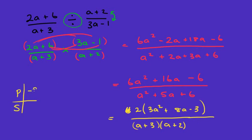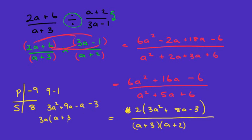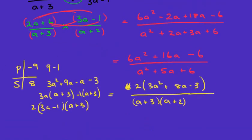To factorize three a squared plus eight a minus three, we use the product and sum method: three times negative three is negative nine, and we need two numbers that multiply to negative nine and add to eight — that's nine and negative one. Splitting the middle term: three a squared plus nine a minus a minus three. Factorizing: three a outside of (a + 3), and minus one outside of (a + 3), giving (3a − 1)(a + 3). Don't forget the two outside the brackets.